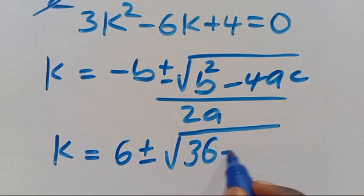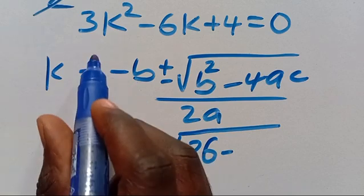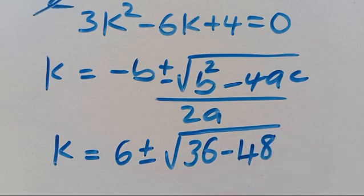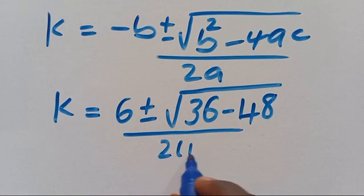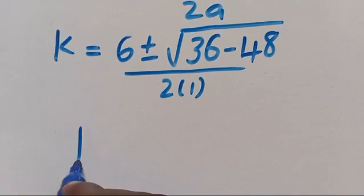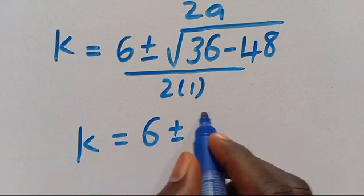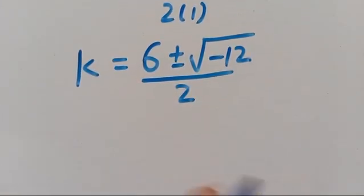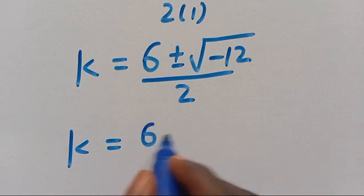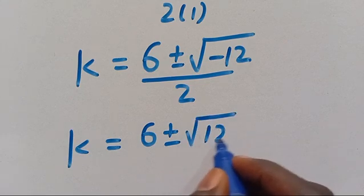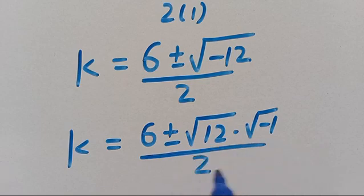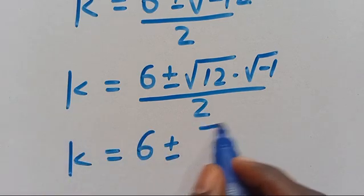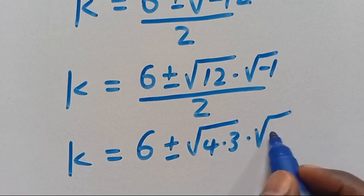So we have K equals 6 plus or minus square root of 36 minus 48, which gives minus 12, divided by 2. We have K equals 6 plus or minus square root of 12 multiplied by square root of minus 1, divided by 2. Since 12 equals 4 times 3, we get K equals 6 plus or minus root 4 times root 3 times root of minus 1, divided by 2. So K equals 6 plus or minus 2 root 3 i, divided by 2.